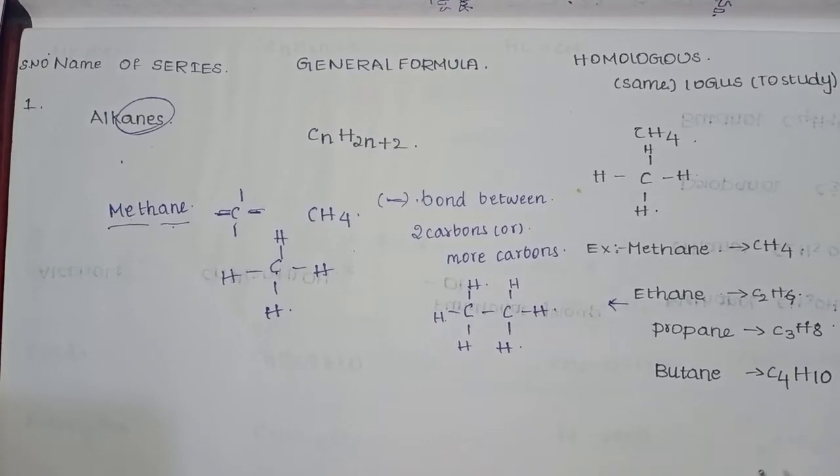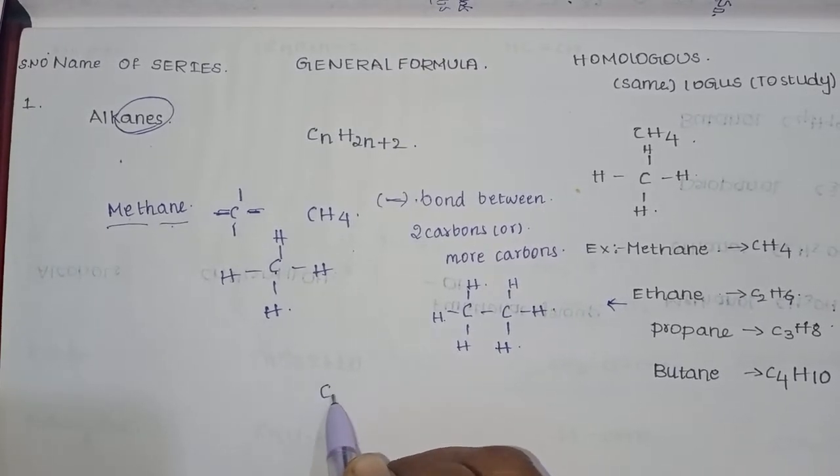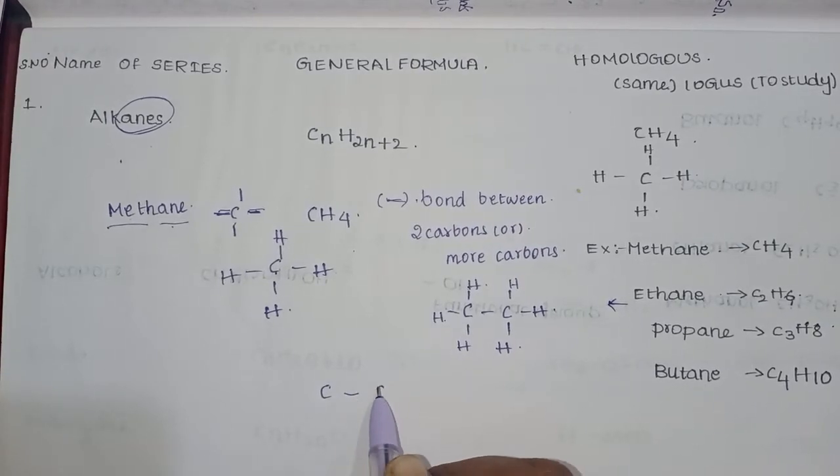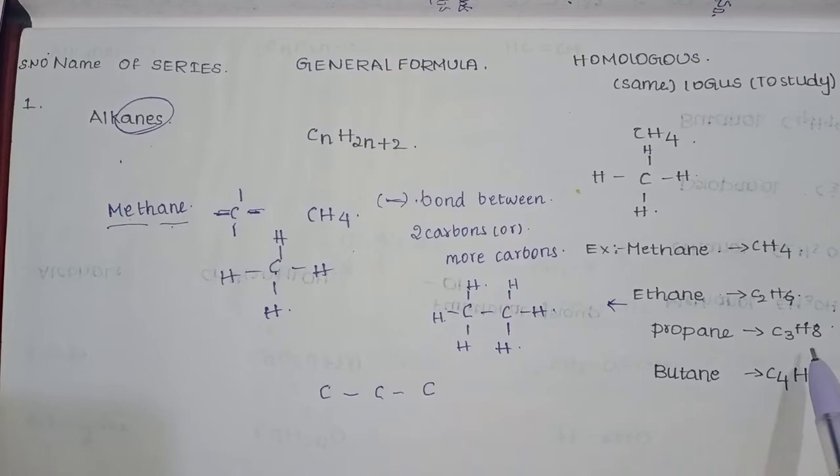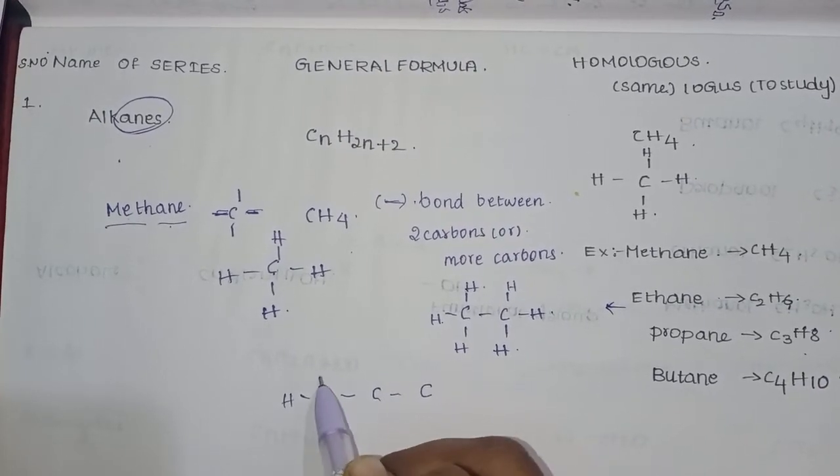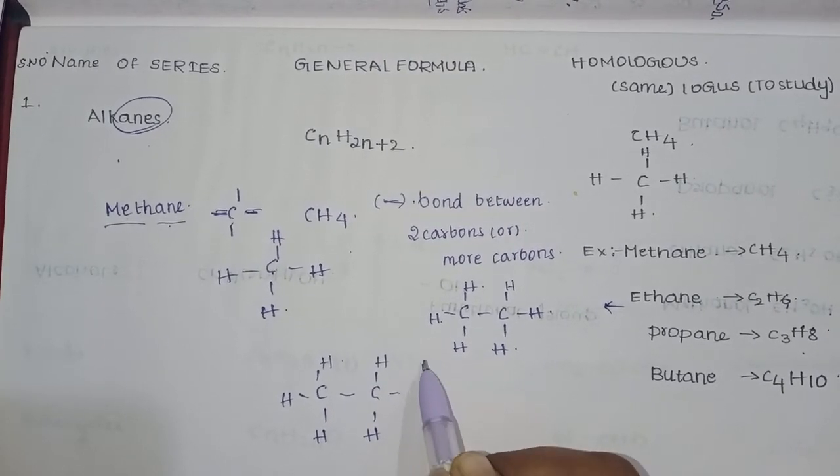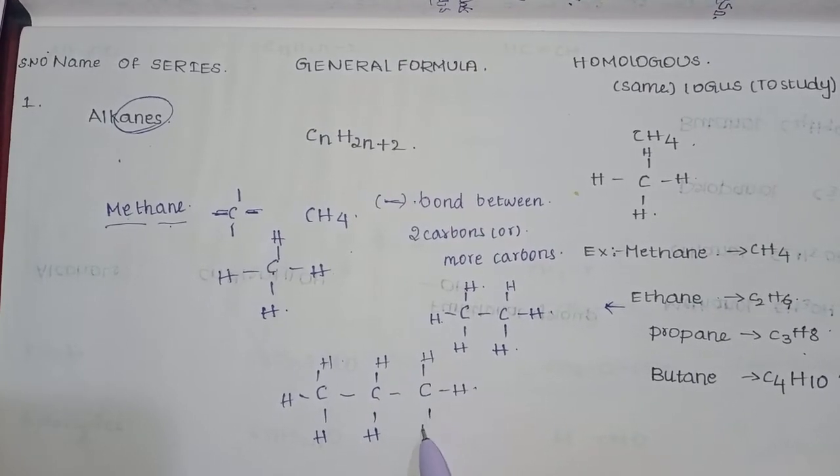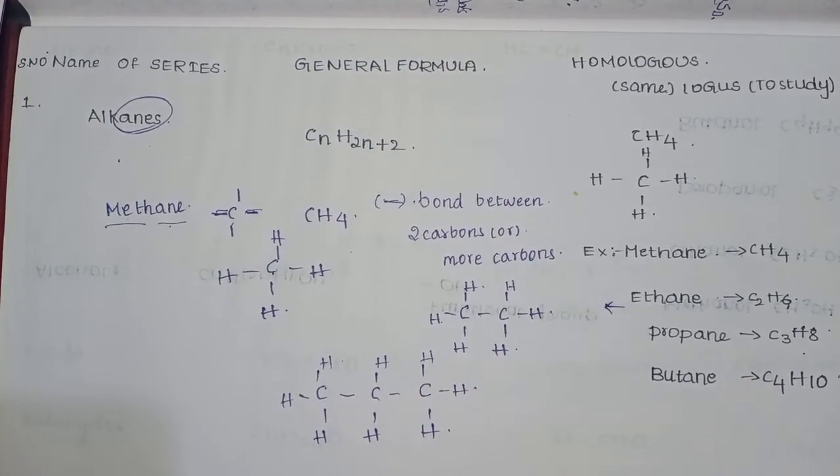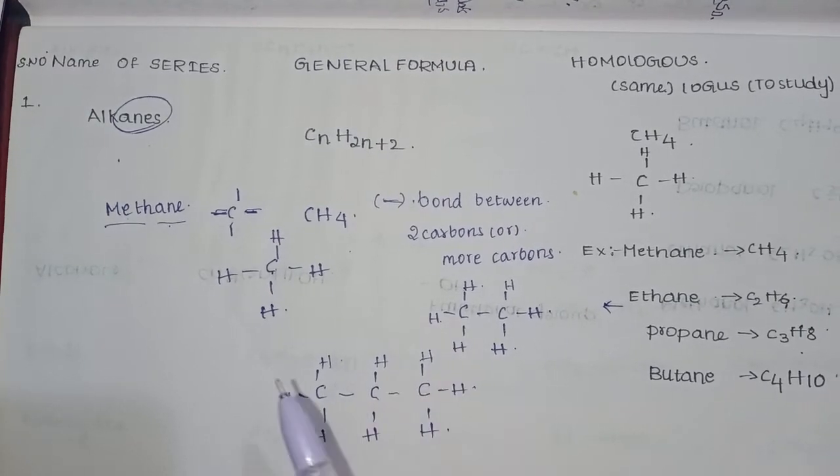Same propane. Propane has three carbons and C3H8. Three carbons with single bonds. And here we find eight hydrogens: one hydrogen, two hydrogen, third, fourth, fifth, sixth, seventh, and eighth. So if we look at this, we are going to get C3H8. But if you observe this, this is the homologous series.